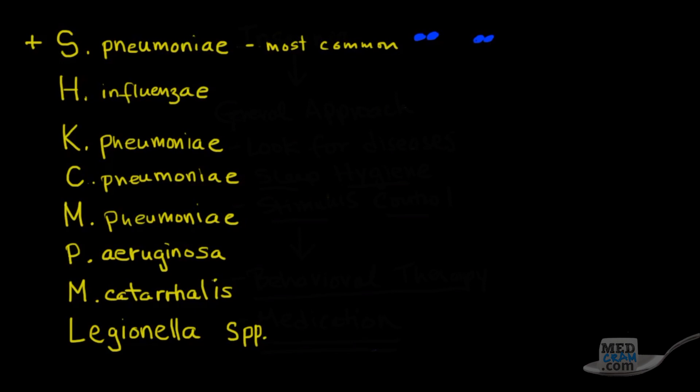Now the next one is Haemophilus influenzae. Haemophilus influenzae is also seen in community-acquired pneumonia very commonly, but not as commonly as Strep pneumo. It's also seen in COPD. Klebsiella pneumoniae, not as commonly seen in pneumonia. It's not a common cause of it, but it is associated with alcohol consumption.